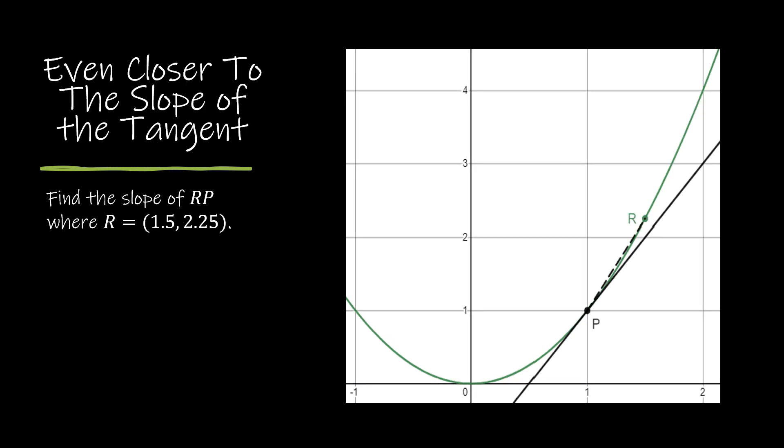Let's find a closer approximation. Instead of point Q, I'm now going to use point R. Point R is a point on a secant line RP. We can find the slope of that line in the same way that we did before. So 2.25 minus one, because one comma one is our other point, and 1.5 minus one. So 2.25 minus one is 1.25, 1.5 minus one is 0.5. That gives me five halves.